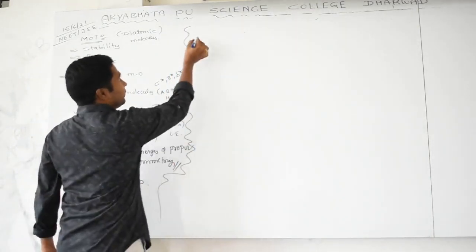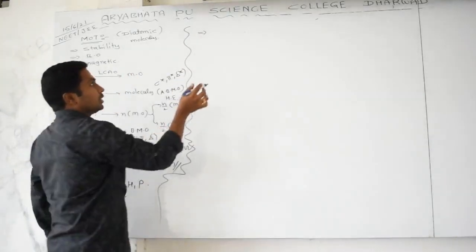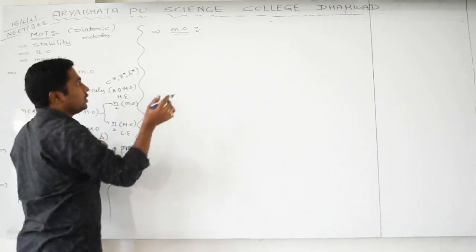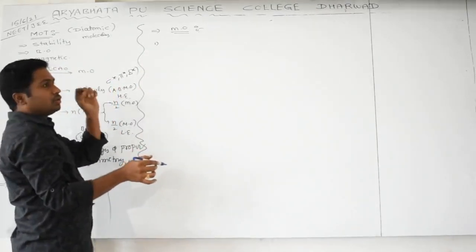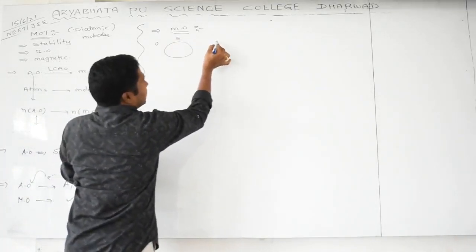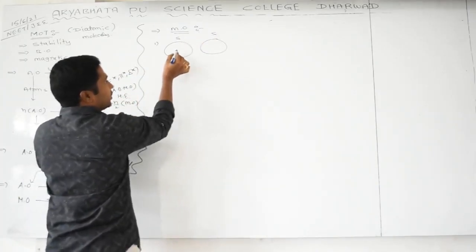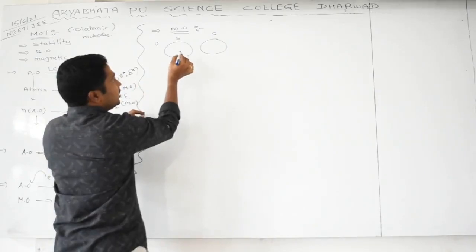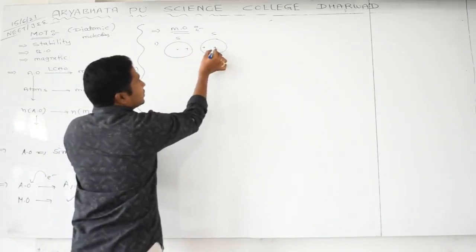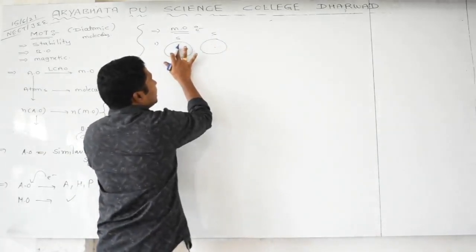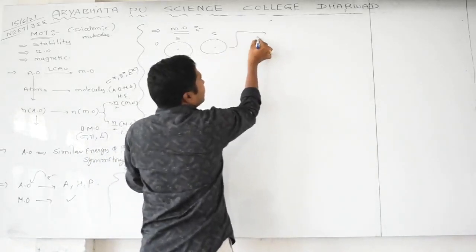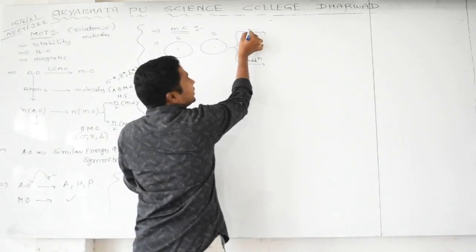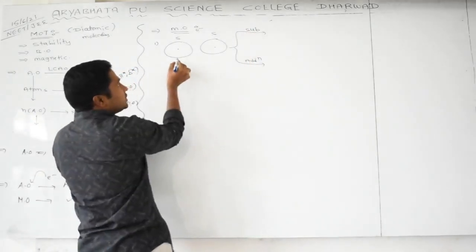The formation of molecular orbitals is very important. For the 1s orbitals from two atoms, they approach through the internuclear axis (end-on overlapping), giving a sigma bond. The two atomic orbitals combine in two ways: constructive interference (addition, ψ_a + ψ_b) and destructive interference (subtraction, ψ_a − ψ_b).